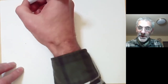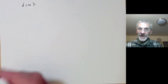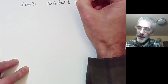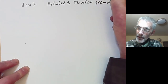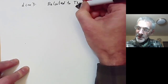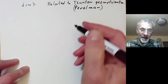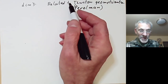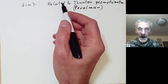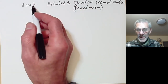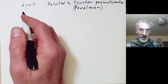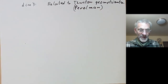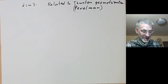Now we'll do dimension three. These are closely related to the Thurston geometrization conjecture, proved by Perelman, which says that every compact three-dimensional manifold can be chopped up into pieces, each of which is one of eight geometries. These eight geometries are quite closely related to several of the three-dimensional Lie groups — in fact, seven of the geometries can be represented as left-invariant metrics on these groups, and there's one geometry left over which doesn't quite fit in.